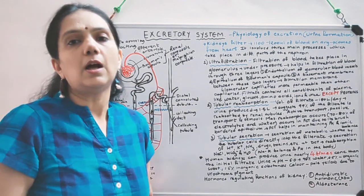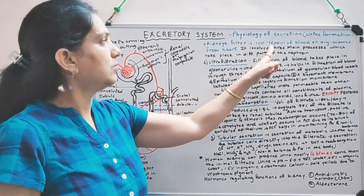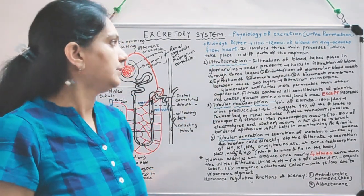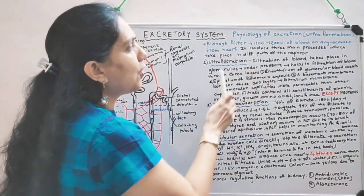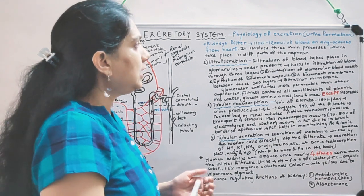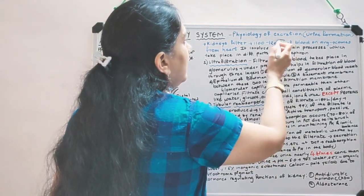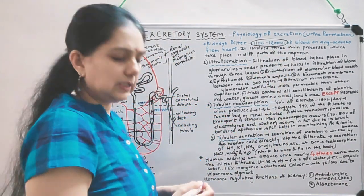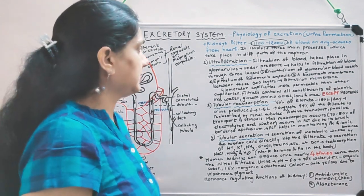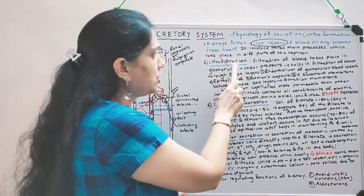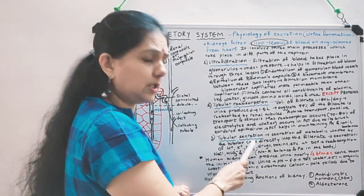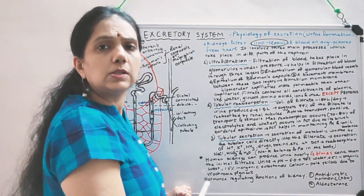Kidneys are the filtrating unit of our body and they filtrate about 1100 to 1200 ml of blood on average, which comes from the heart. This is one fifth of the blood pumped out from both ventricles. In the formation of urine, there are three main steps: first is glomerular filtration, also called ultrafiltration; second is tubular reabsorption; and third is tubular secretion.